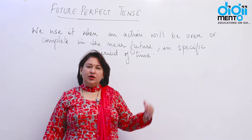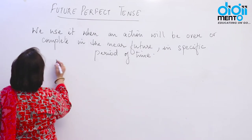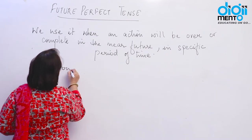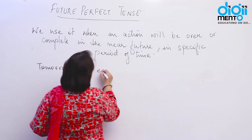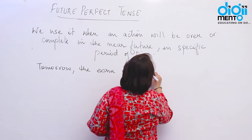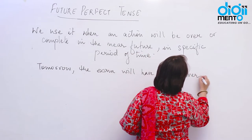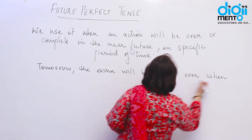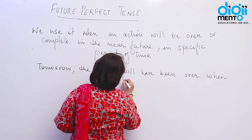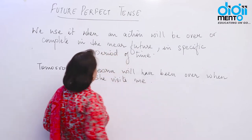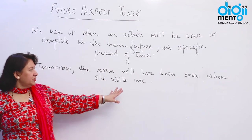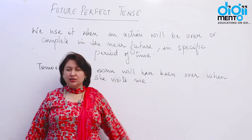Let's look into an example. If I say 'Tomorrow, the exam will have been over when she visits me.' That means when she visits me tomorrow, the exam will be finished.